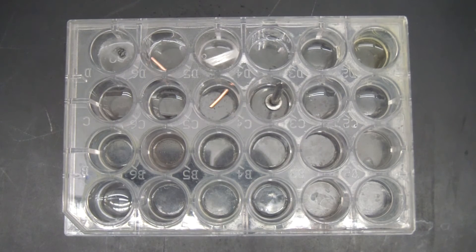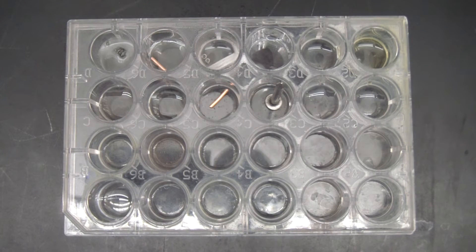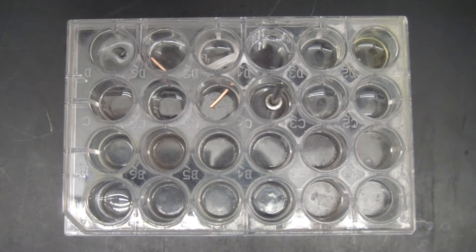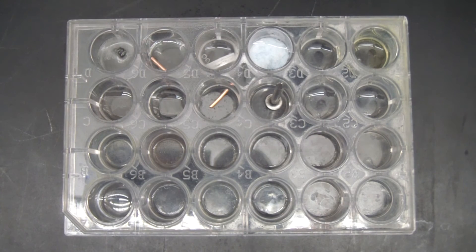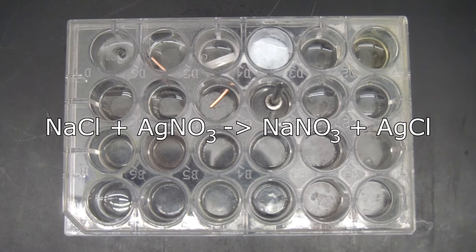All right, in the next well, I have already placed into it some sodium chloride, and so to that sodium chloride, I'm going to add some silver nitrate, and you throw that in, and you can see that we get a white precipitate. And this particular reaction looks like this, right here.